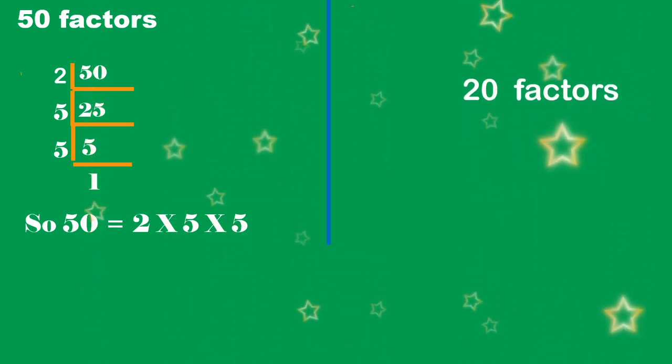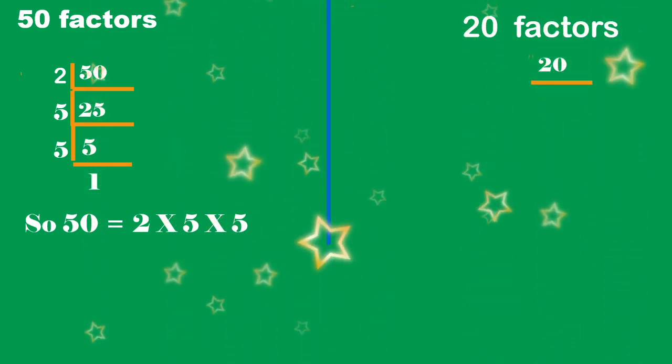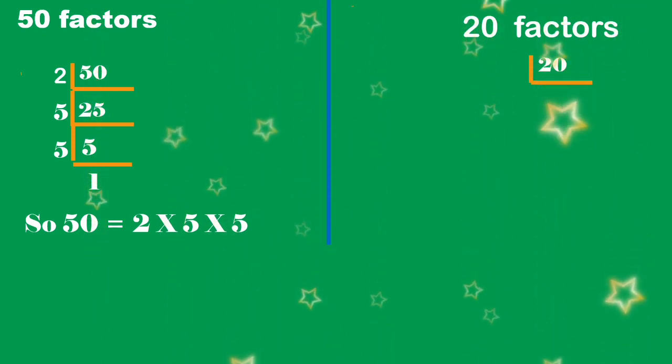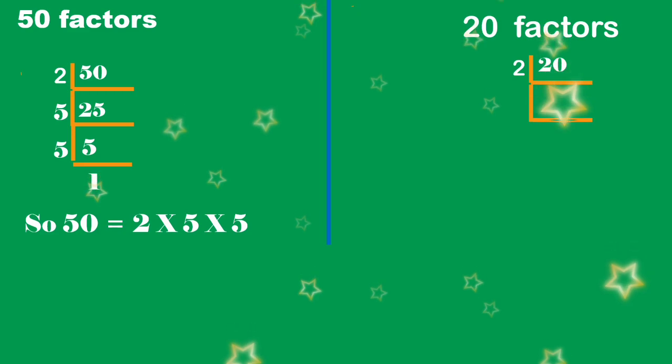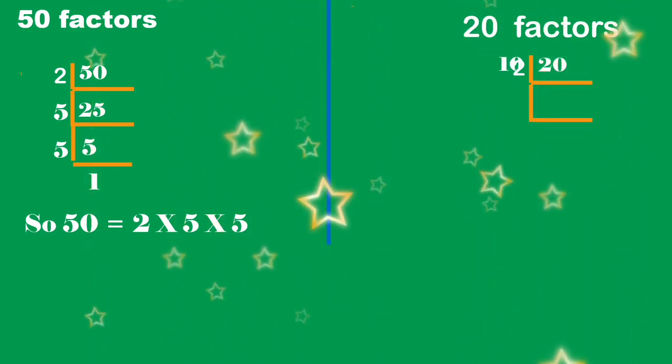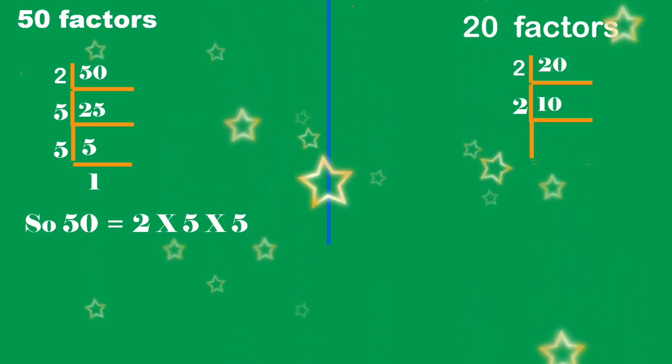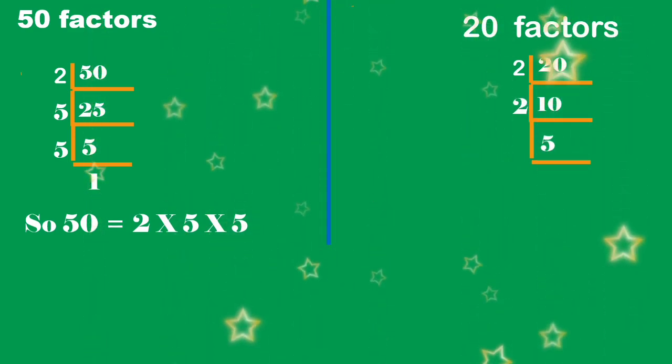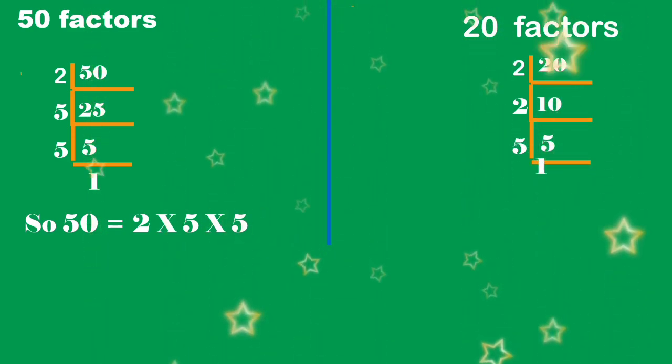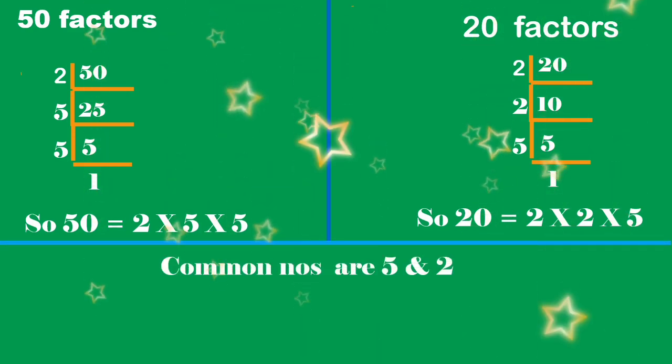Next, finding factors of 20: 20 is an even number, so it's divided by 2. 20 divided by 2 is 10. 10 is also even, so again divided by 2. 10 divided by 2 is 5. 5 can be divided by 5, which equals 1. So 20 = 2 × 2 × 5.